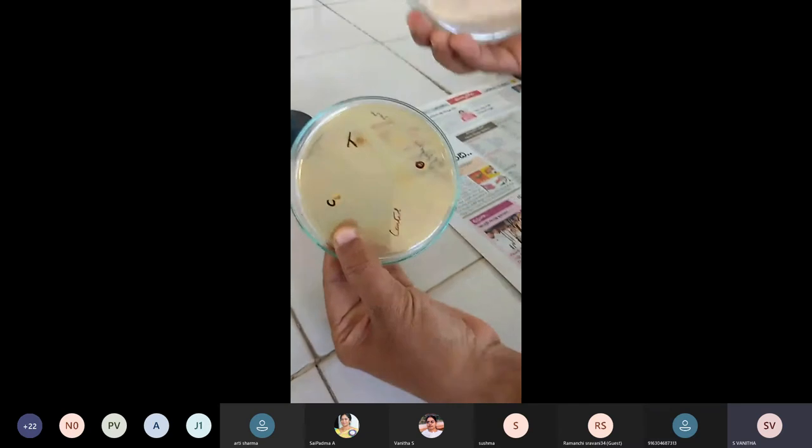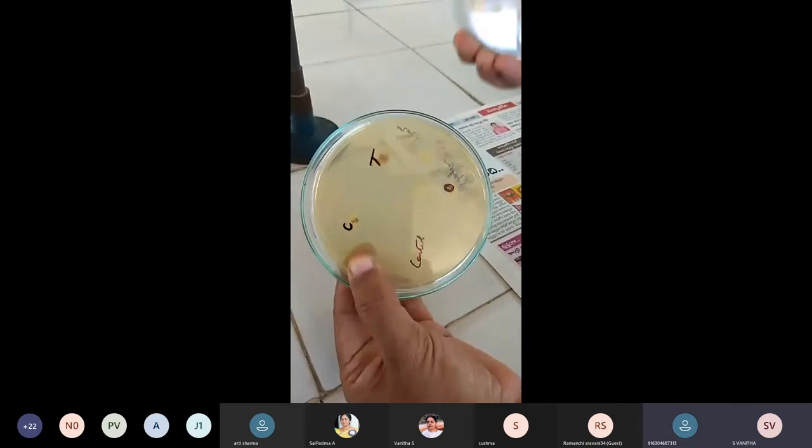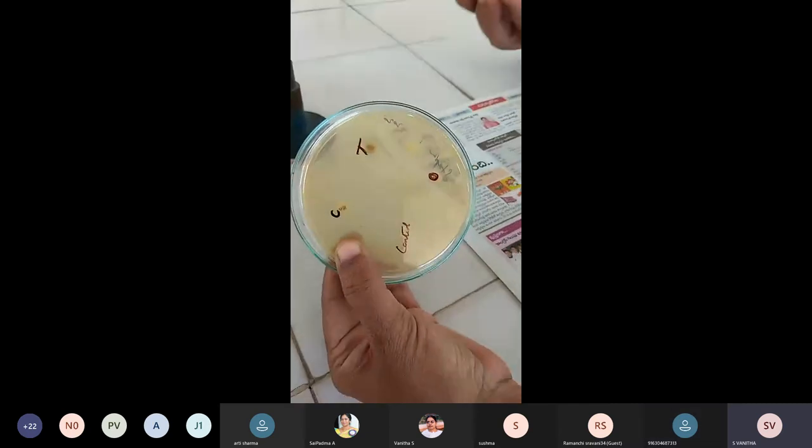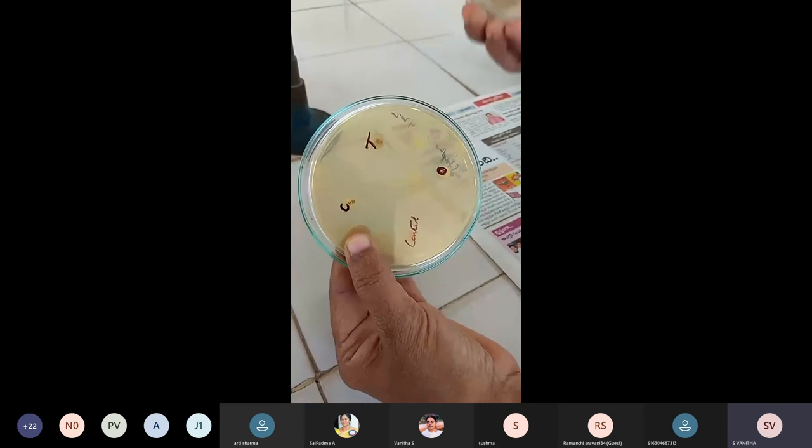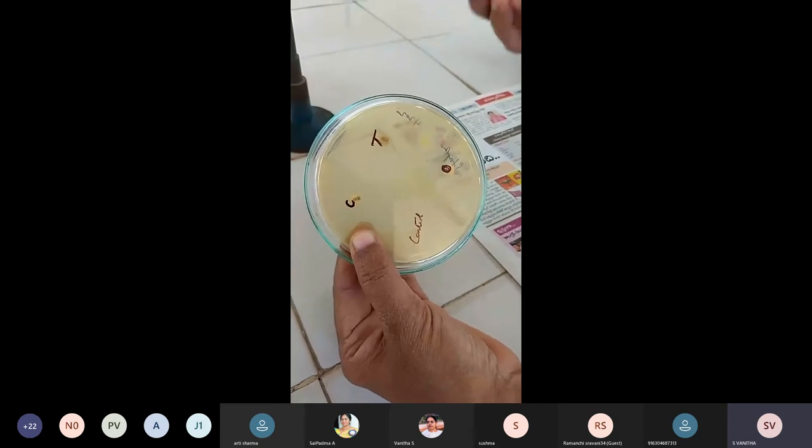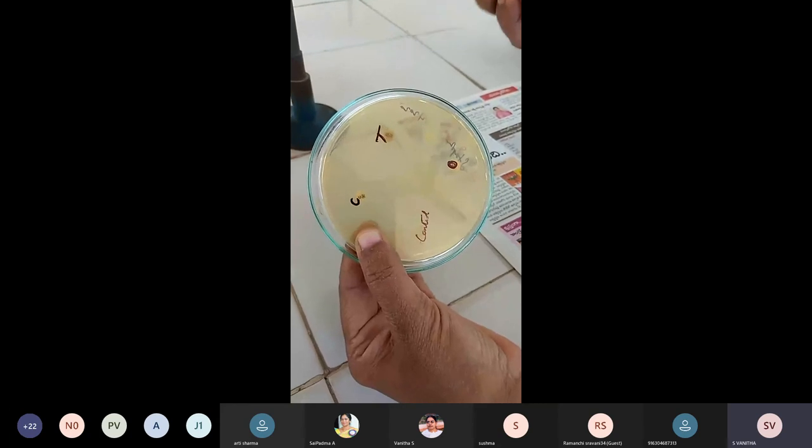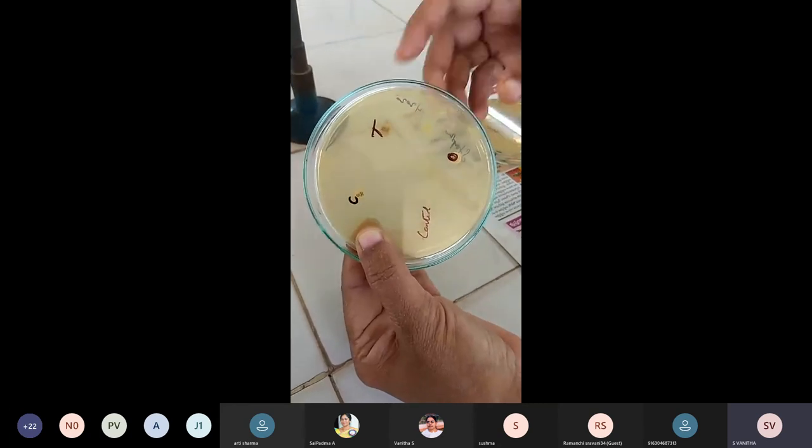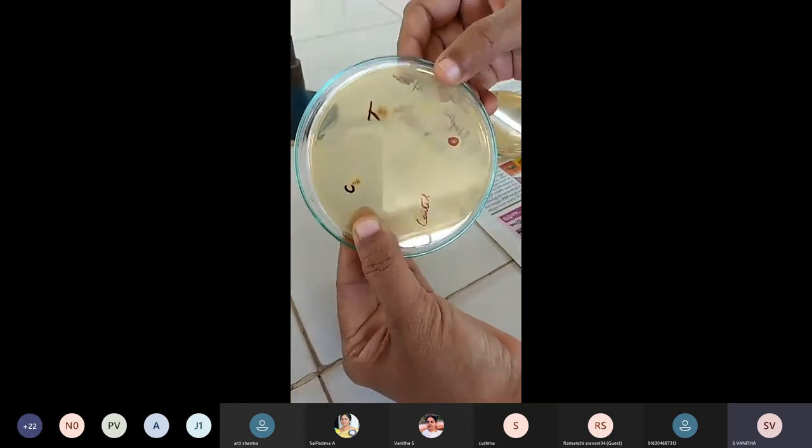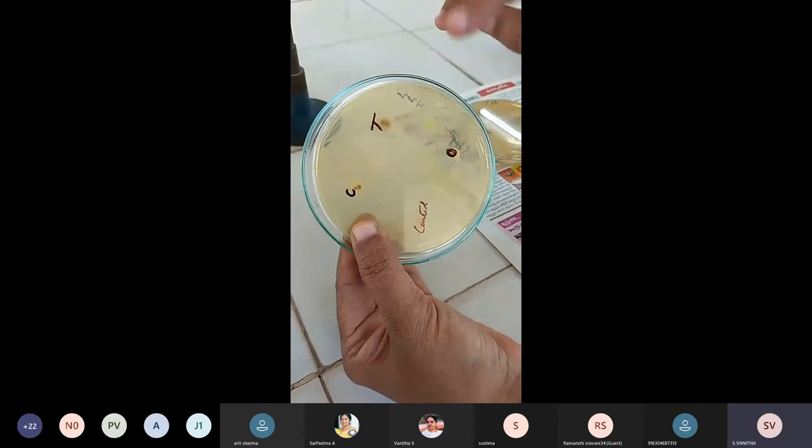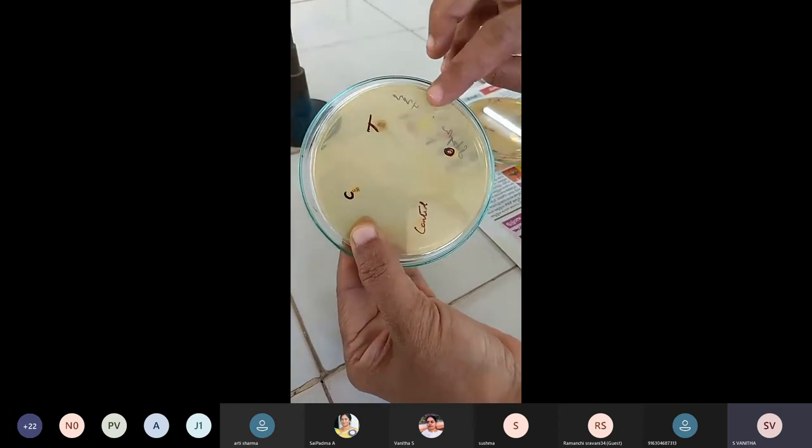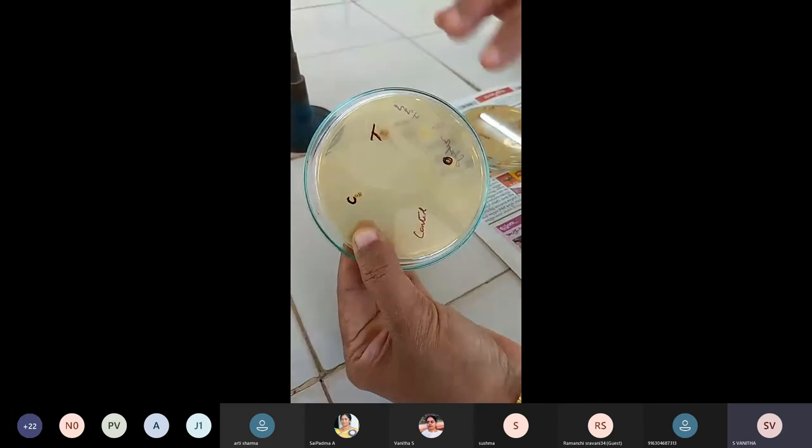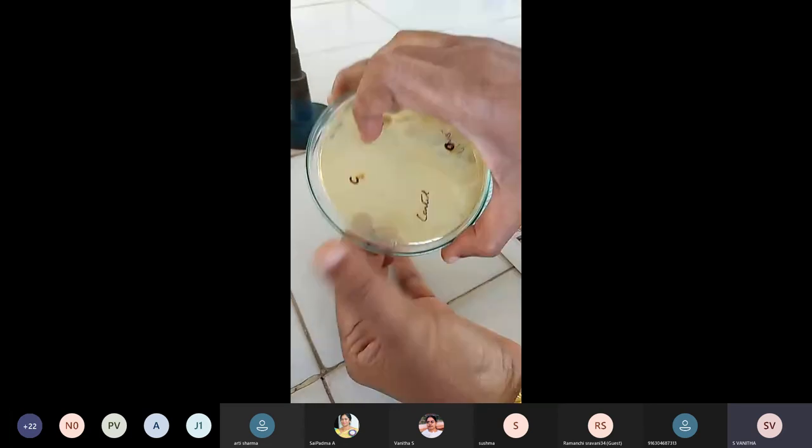Yes. Here the E. coli organism was sensitive, and all the zones I have measured are starting from 15mm only, so that means the organism is highly sensitive. But Staphylococcus, there was no zone of inhibition, so that shows that the organism is resistant to all the antibiotics.